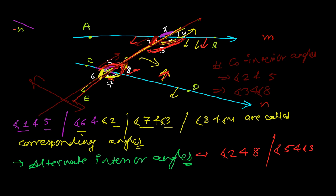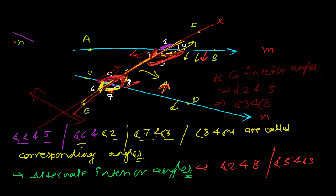In the next video, we are going to learn a very, very important topic of this entire geometry: how alternate interior angles are equal, corresponding angles are equal, and the sum of co-interior angles is 180 degrees when two lines are parallel and a transversal is cutting them. See you in the next video.